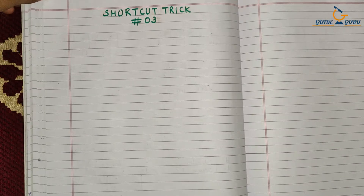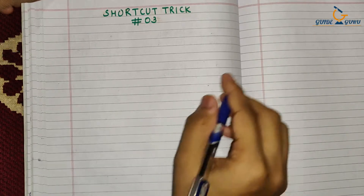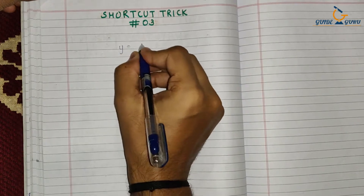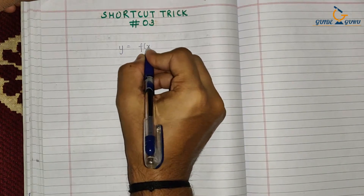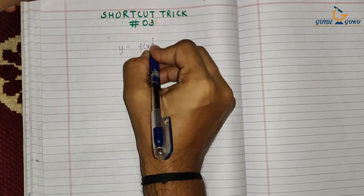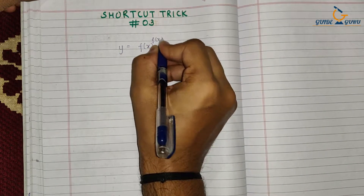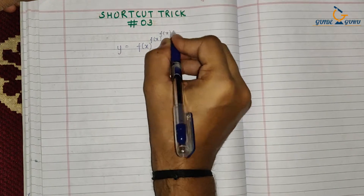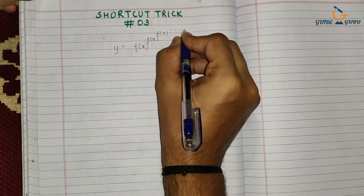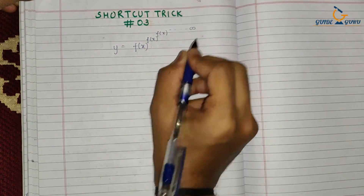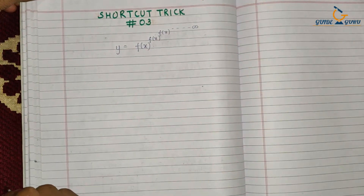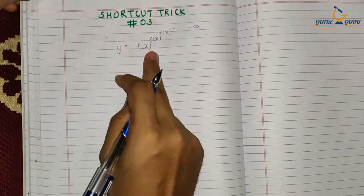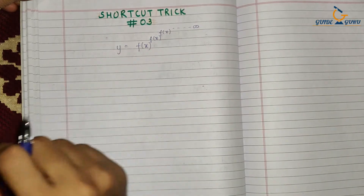Now this infinite series would look like this: y is equal to f(x) to the power f(x) to the power f(x) and it goes on till infinity. And you have to calculate the derivative.